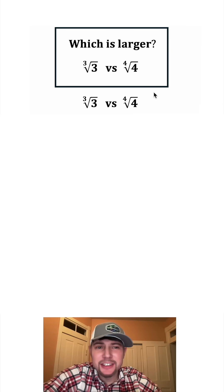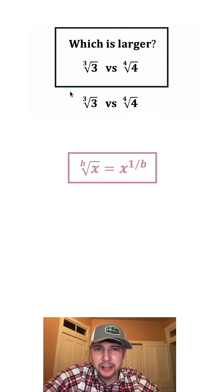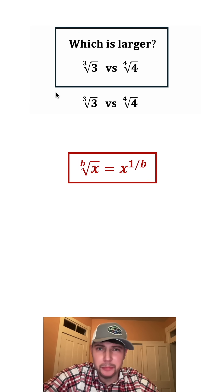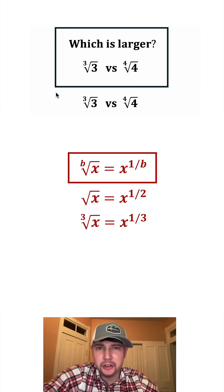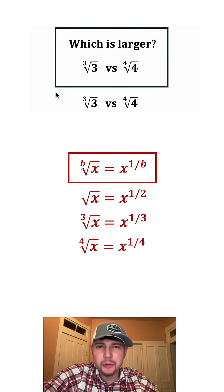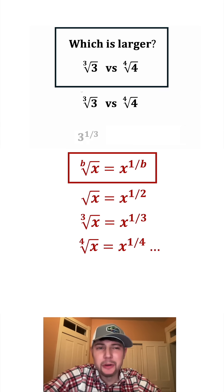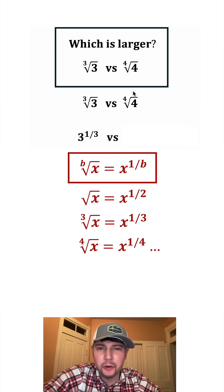First, let's write this in rational exponent form. Here are the notes right here. The bth root of x is equal to x to the power of one over b. So for example, the square root of x would be x to the one half, the cube root of x would be x to the one third, and the fourth root of x would be x to the one fourth and so on. So we can rewrite the cube root of three as three to the one third, and the fourth root of four as four to the one fourth.